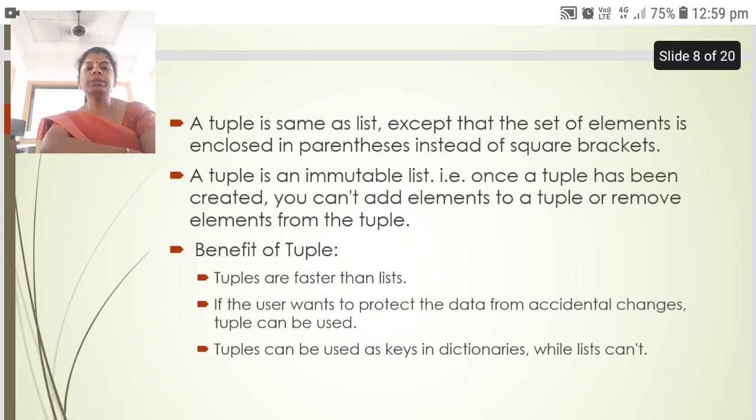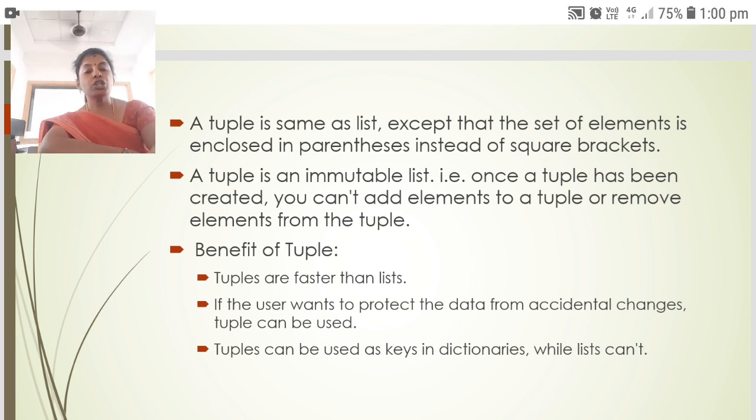A tuple is same as list except that the set of elements is enclosed in parenthesis instead of square brackets. A tuple is an immutable list. That is, once a tuple has been created, you cannot add elements to a tuple or remove elements from the tuple. The benefits of tuples are: tuples are faster than list. If the user wants to protect the data from accidental changes, tuple can be used. Tuples can be used as keys in dictionaries, while lists cannot.